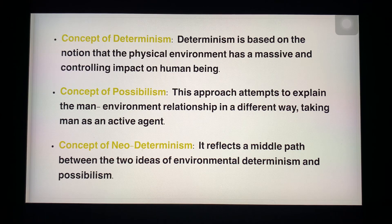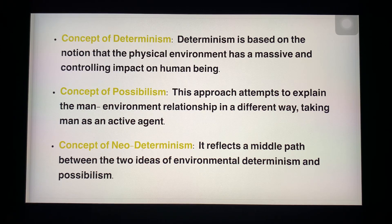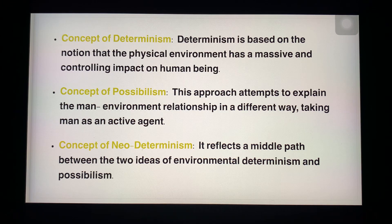The concept of possibilism: this approach attempts to explain the human-environment relationship in a different way, taking man as an active agent. Here the human being is an active agent transforming the environment in their own way. Then the concept of neodeterminism: it reflects a middle path between the two ideas of environmental determinism and possibilism — neodeterminism brings an idea between determinism and possibilism, which is known as neodeterminism.